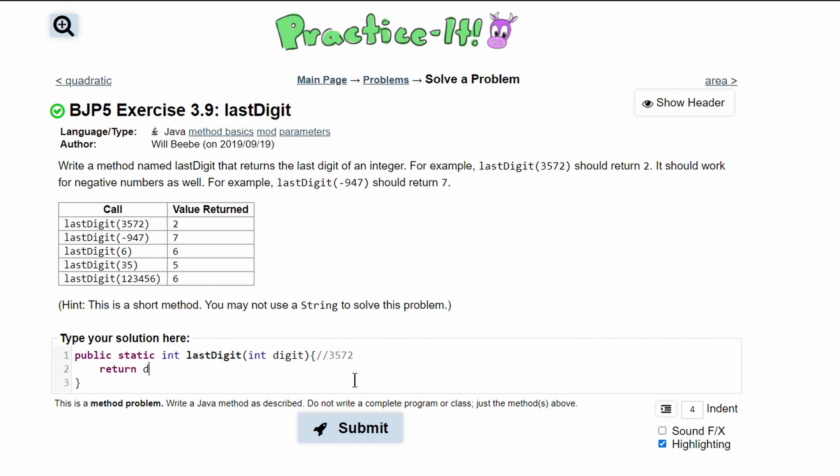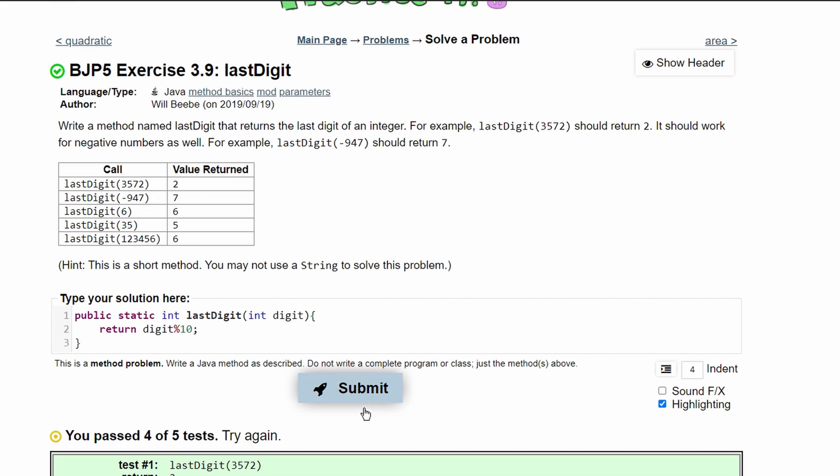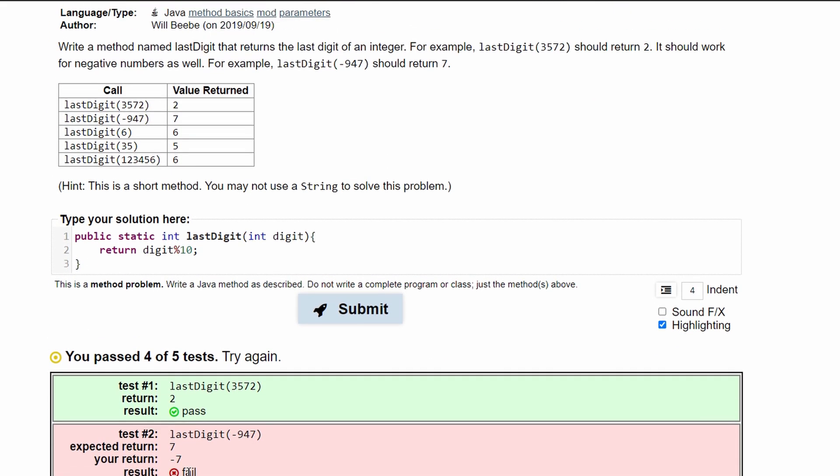We're going to return digit then the modulus dividing it by 10. Dividing by 10 will give us this value right here. If we submit this we can see that we've passed almost all but one test.